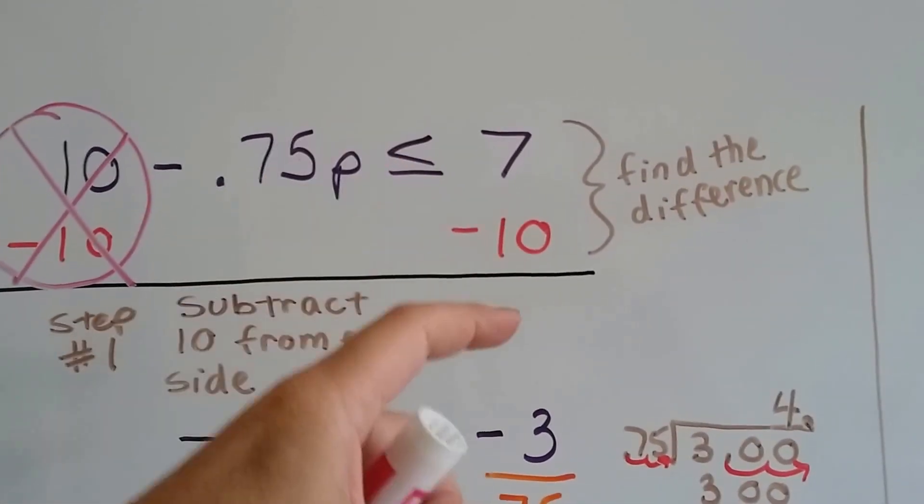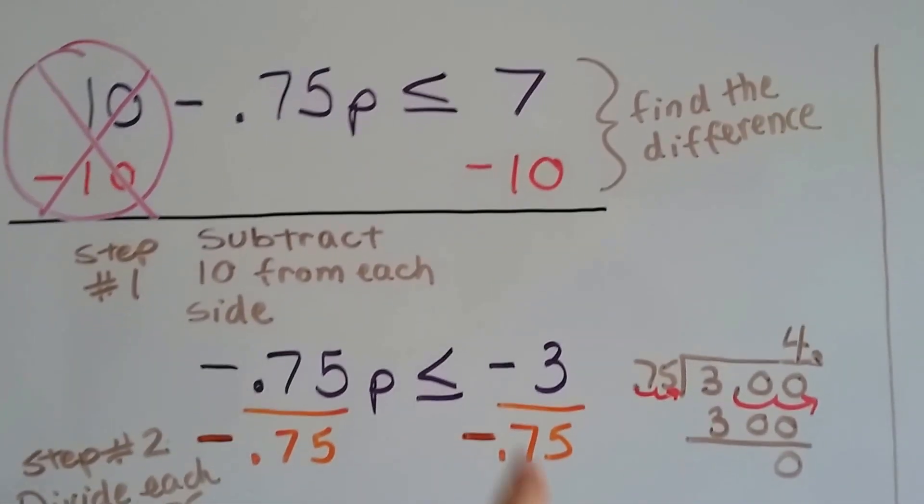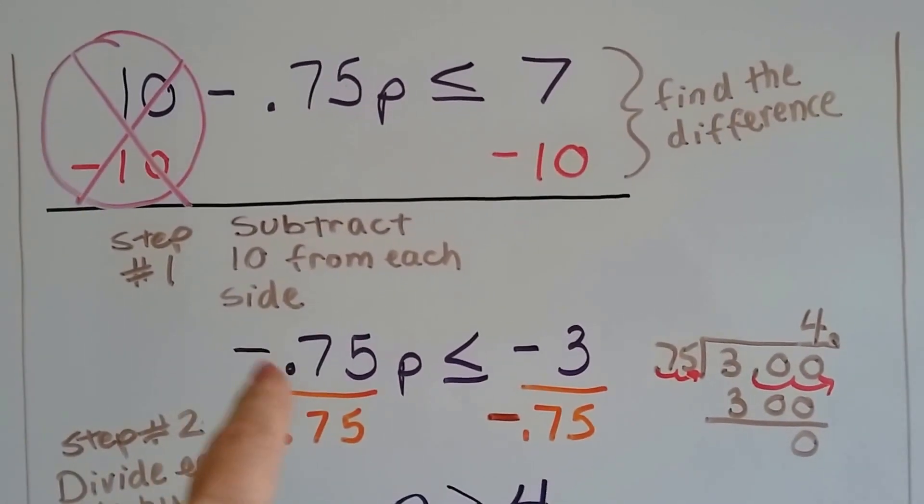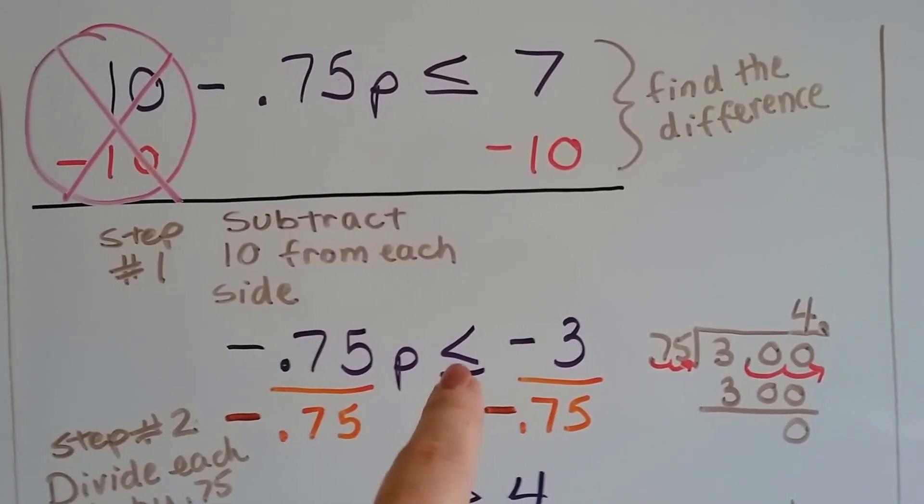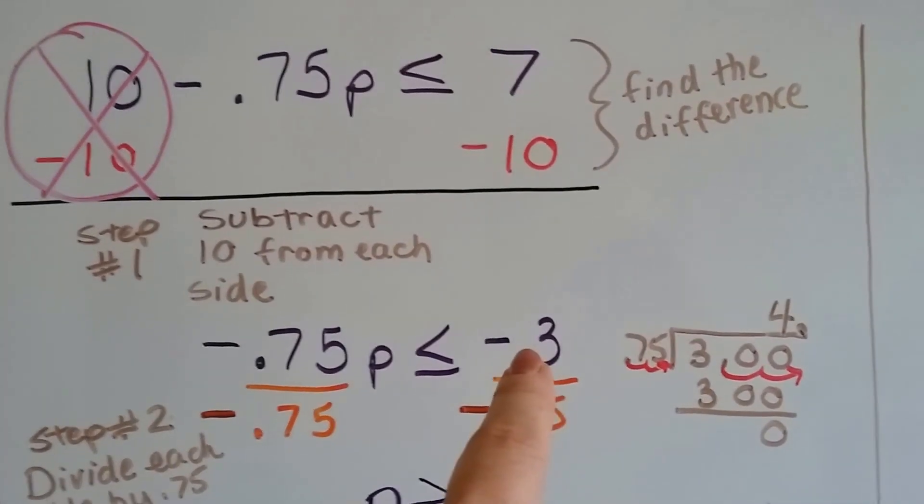Well, 10's so big it's going to push the 7 into the negatives, isn't it? So it's going to become negative 3. So now we've got negative 0.75p is less than or equal to negative 3.